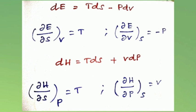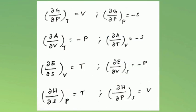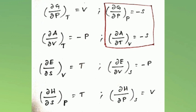Third, from internal energy: dU = TdS − PdV. At constant volume, dU = TdS, so (∂U/∂S) at constant volume equals T. At constant entropy, dU = −PdV, so (∂U/∂V) at constant S equals −P. Fourth, from enthalpy: dH = TdS + VdP. At constant pressure, dH = TdS, so (∂H/∂S) at constant pressure equals T. At constant entropy, dH = VdP, so (∂H/∂P) at constant S equals V.